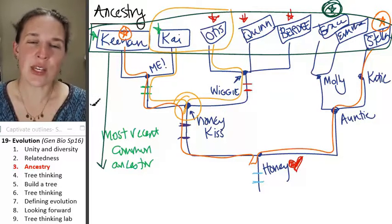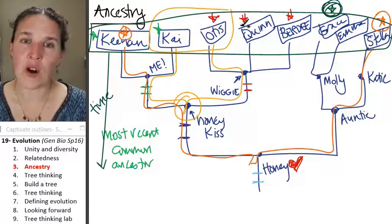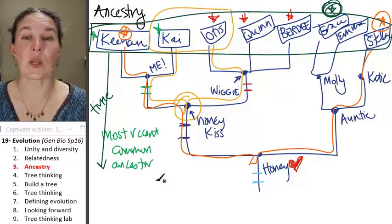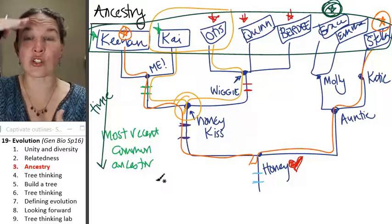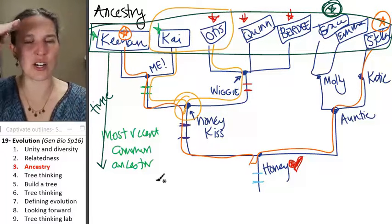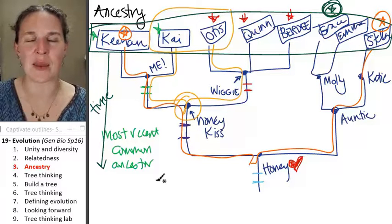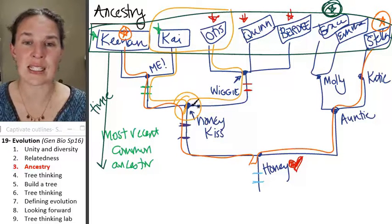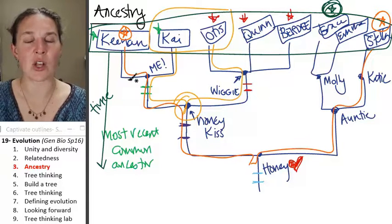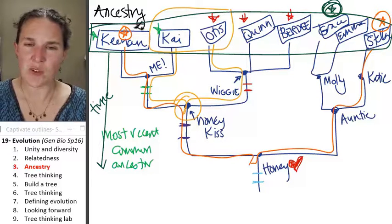You can also learn about time from an evolutionary tree. So usually we have the vertical axis on an evolutionary tree is actually representing time, the passage of time. So you can imagine that Honey Kiss giving rise to me and Wiggy is an event that happened longer ago than me giving rise to Kenan and Kai. Do you follow that?